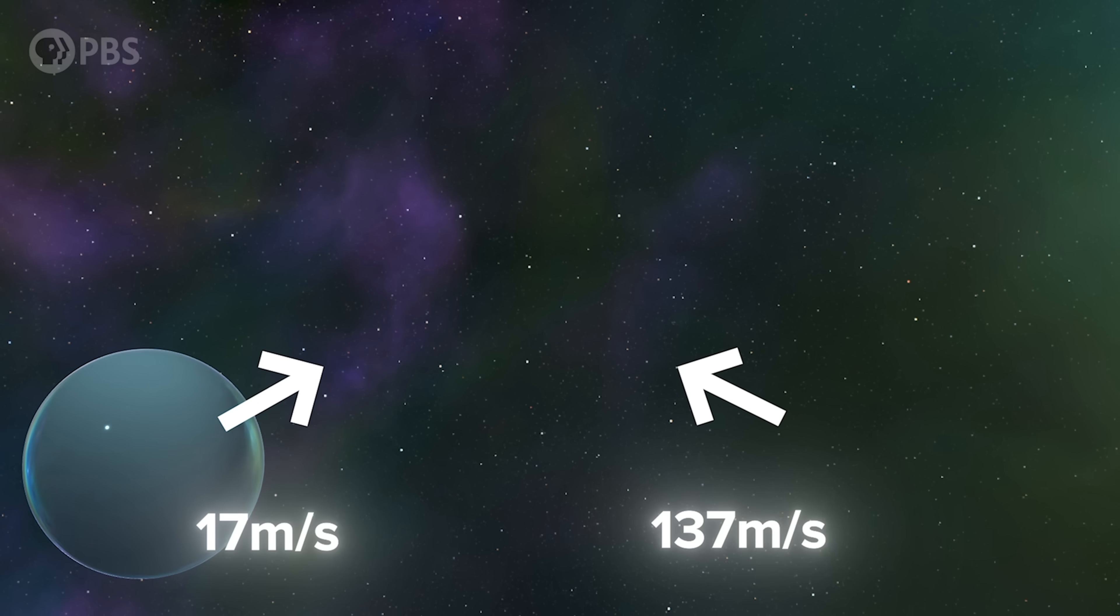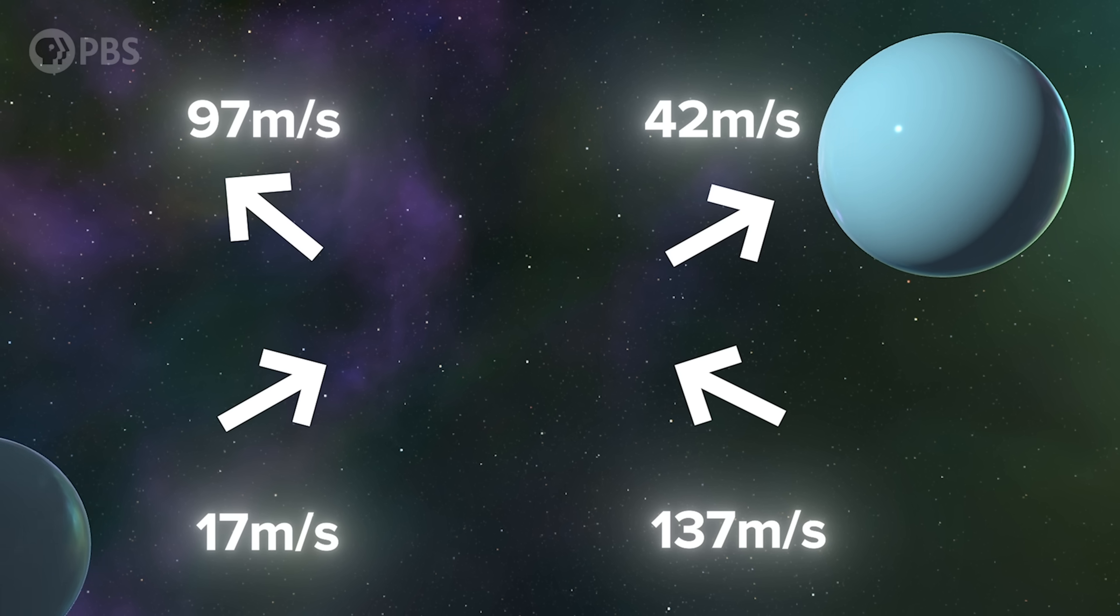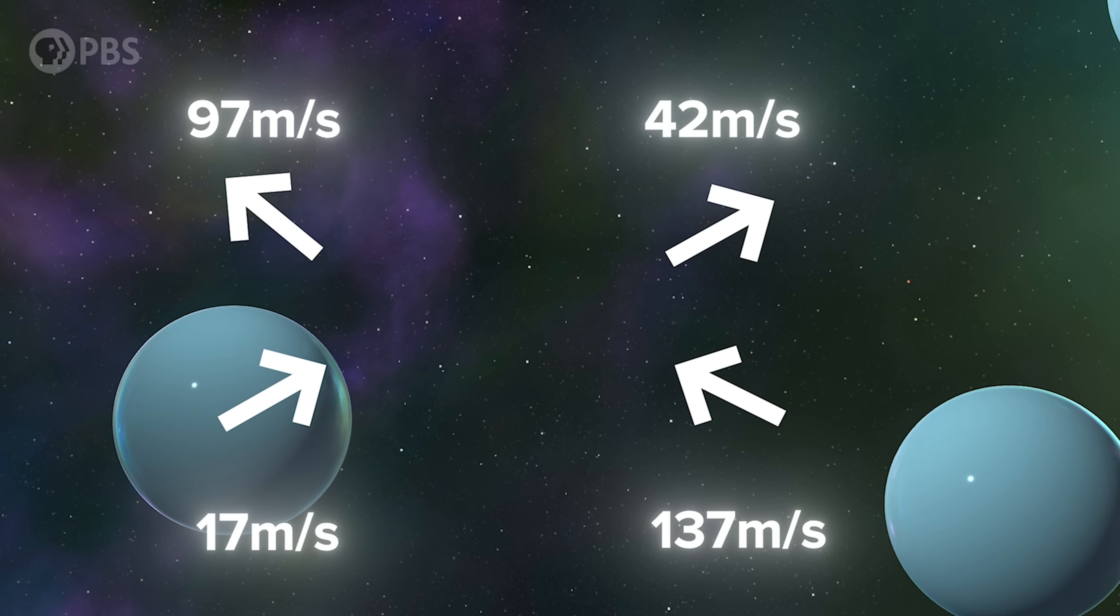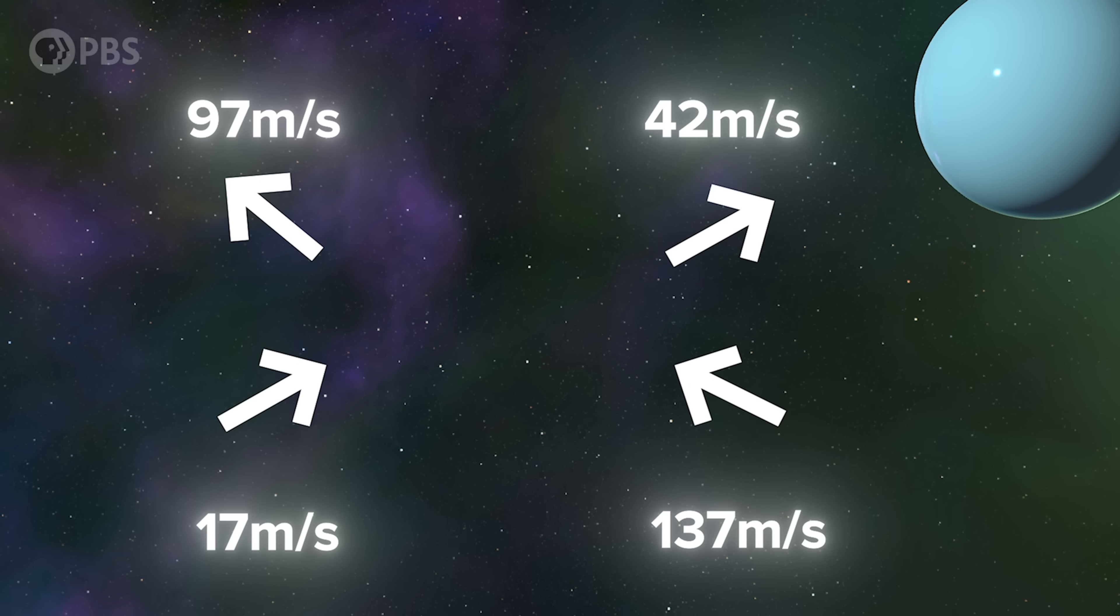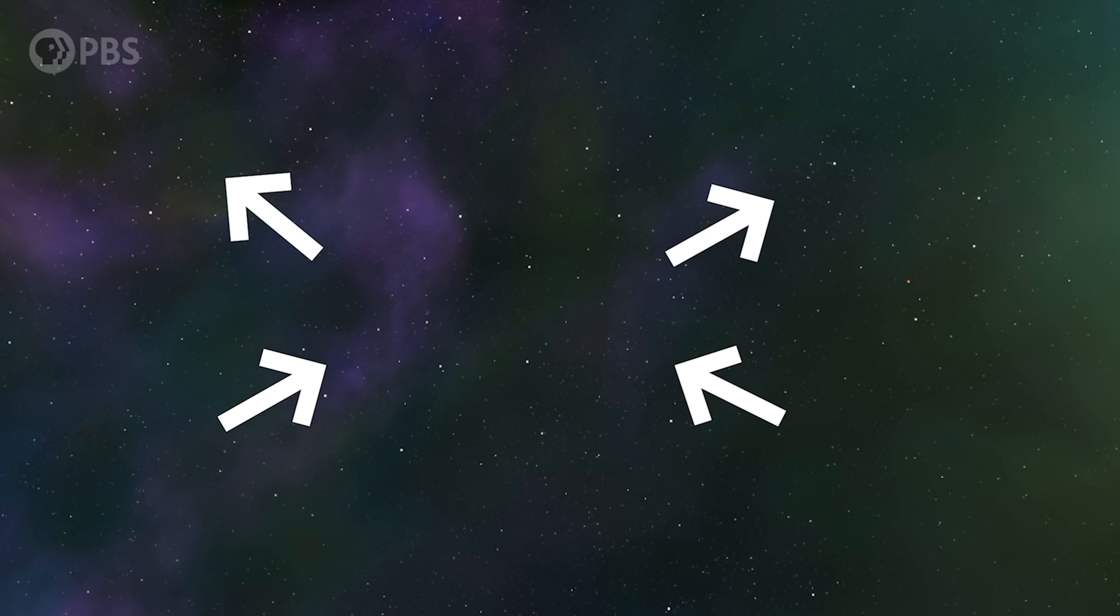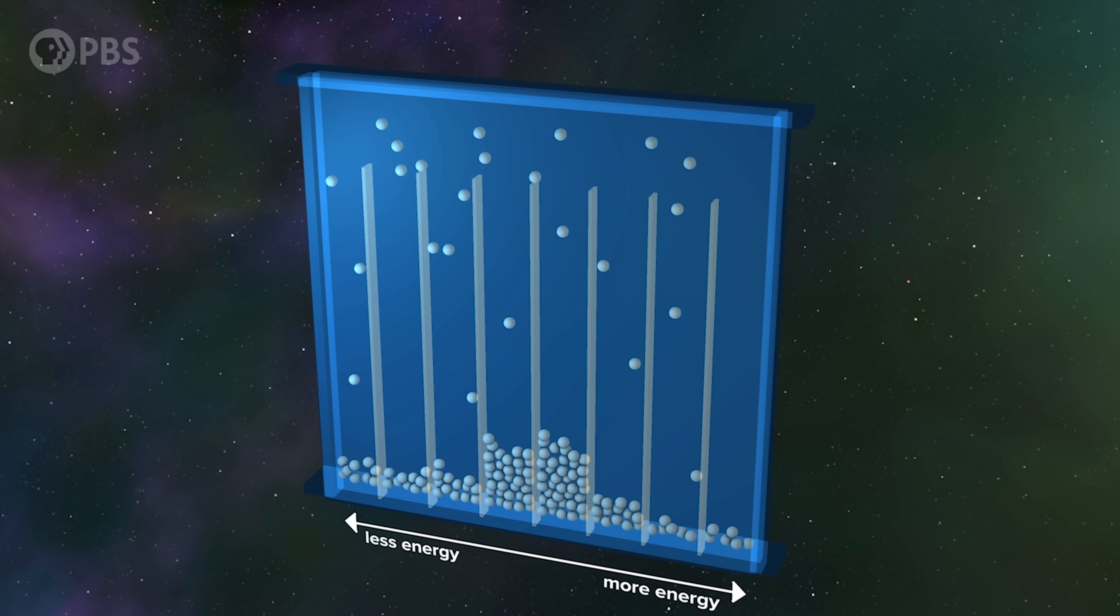To realize the full power of stat mech, we need to stop thinking about particle positions and instead think about energy. Back to our bouncy balls. Let's imagine that they could also bounce off each other. As they move around the room, they change position, and they also change velocity as they collide, and so exchange energy with each other.